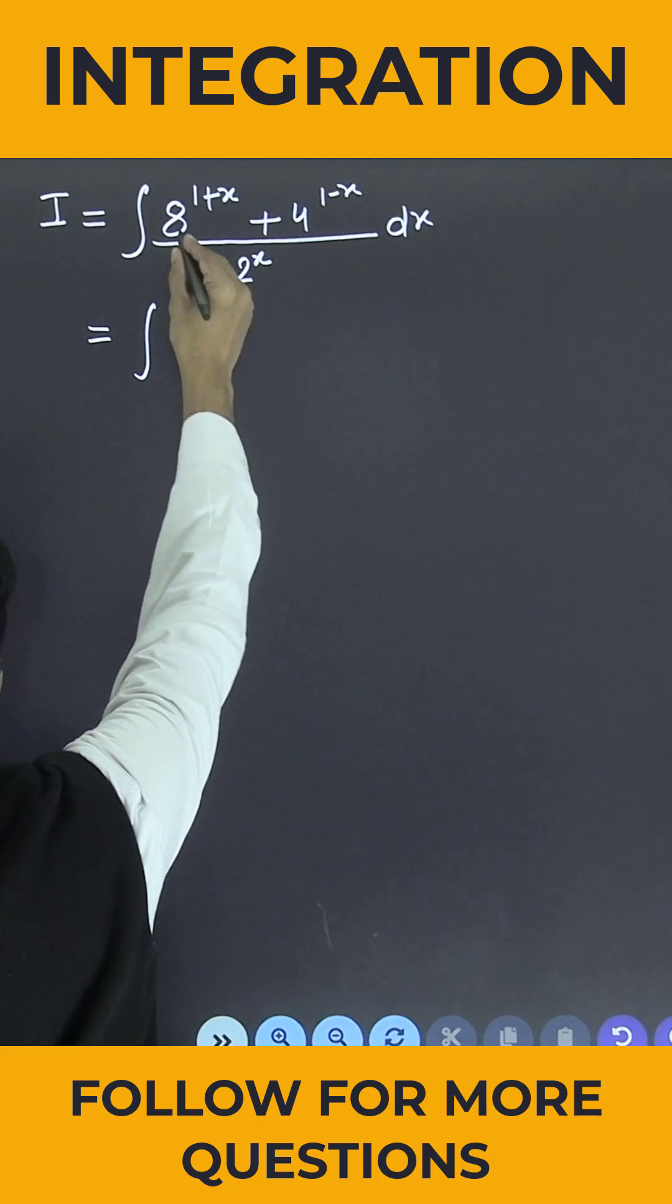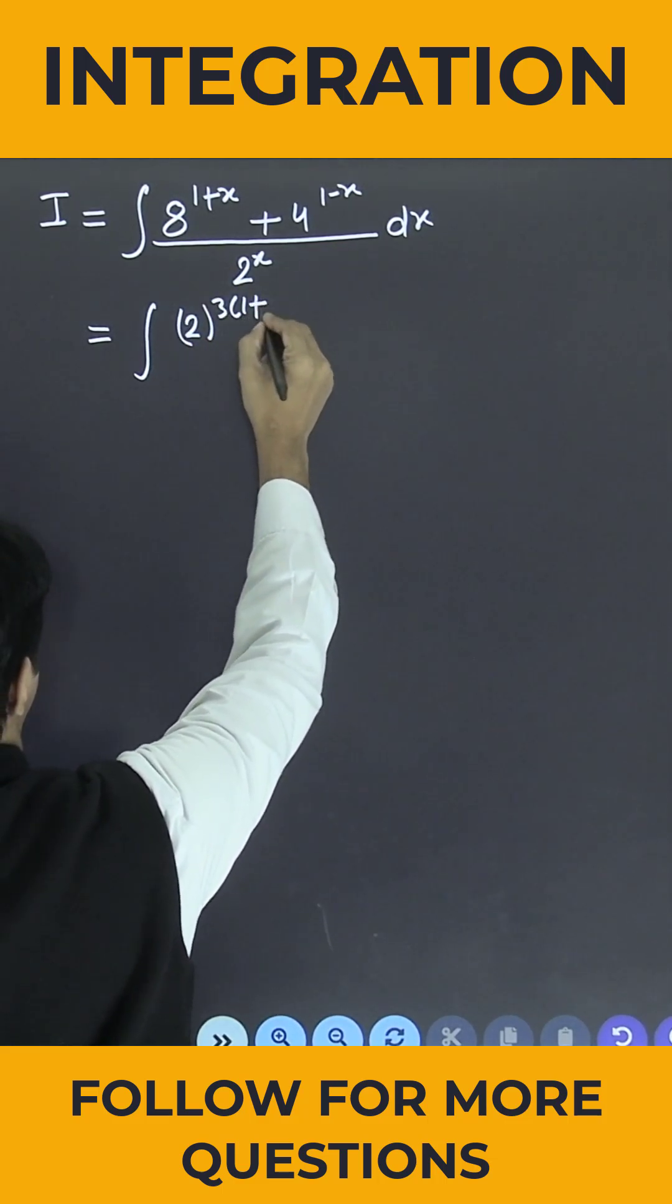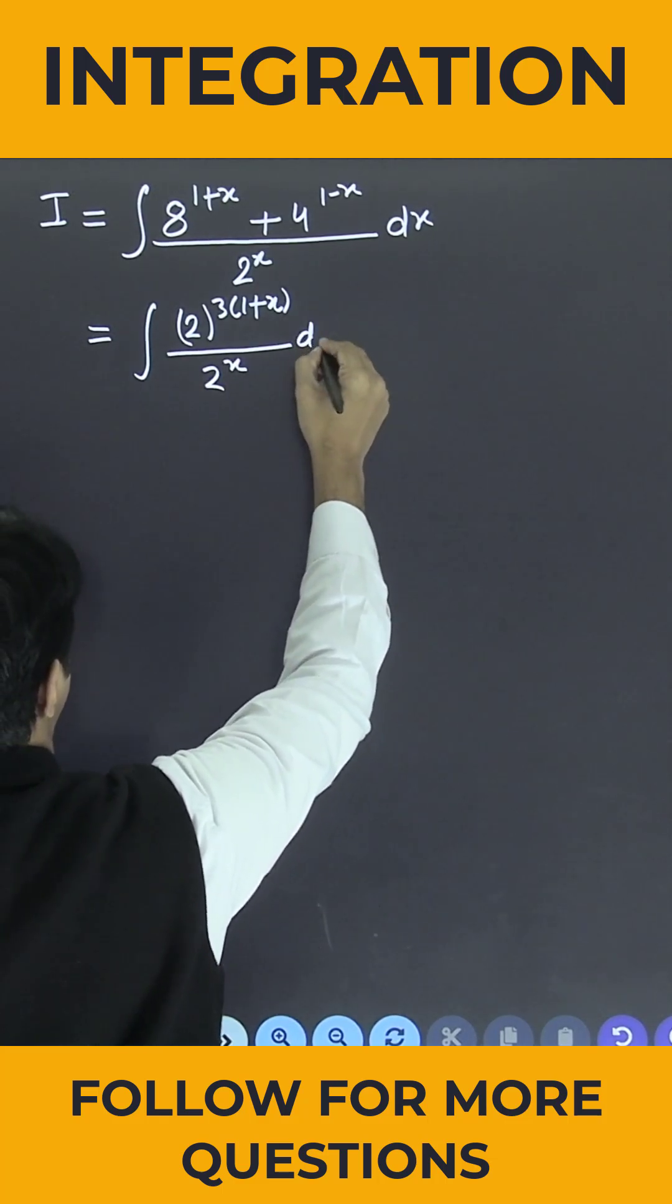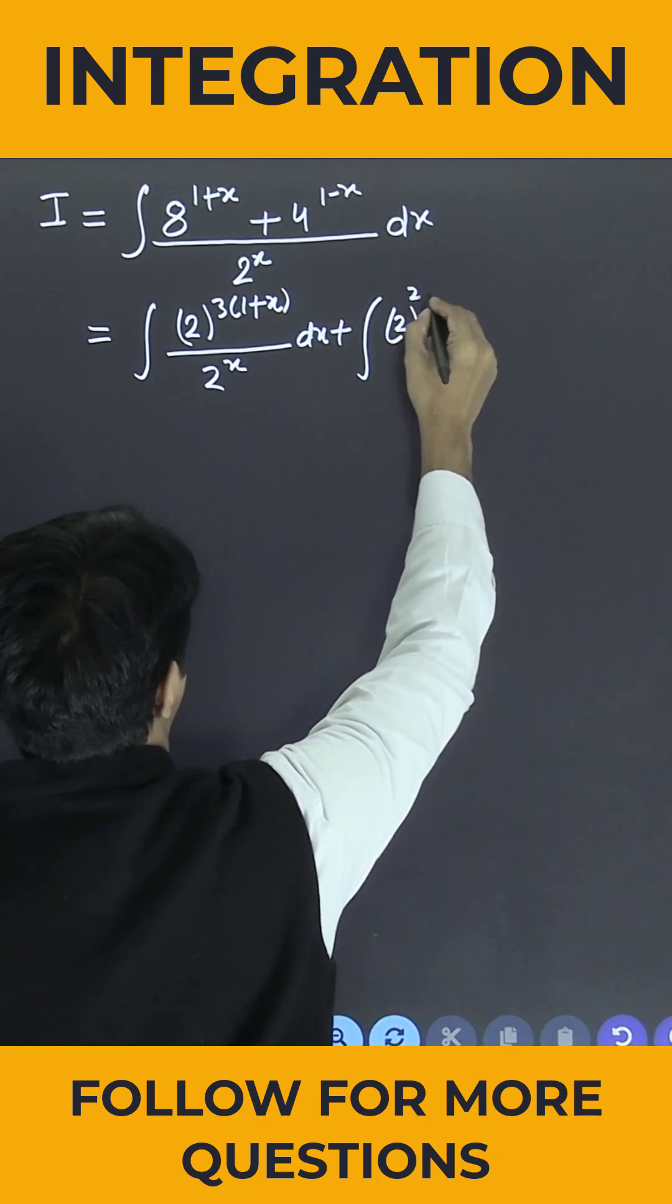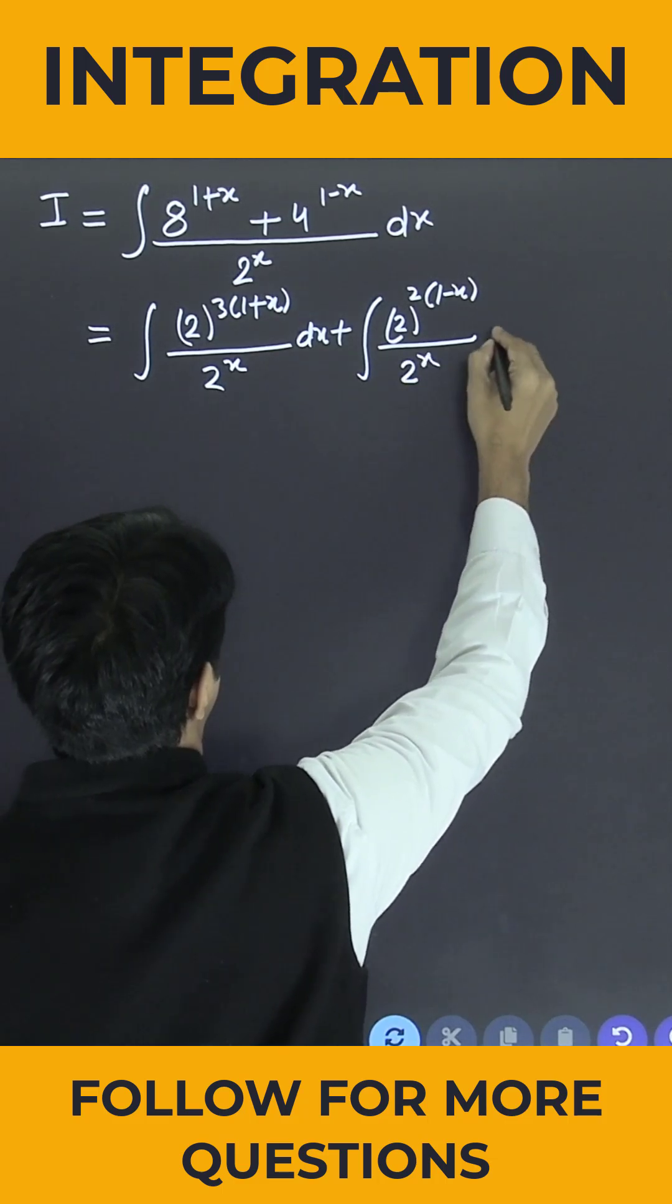This is equal to the integral of 2 to the power 3 times 1 plus x, divided by 2 to the power x, dx, plus the integral of 2 to the power 2 times 1 minus x, divided by 2 to the power x, dx.